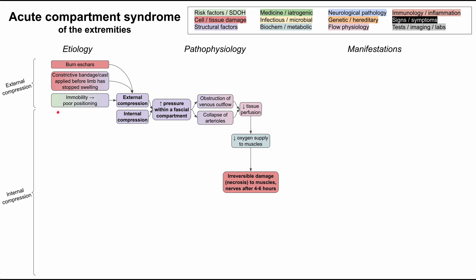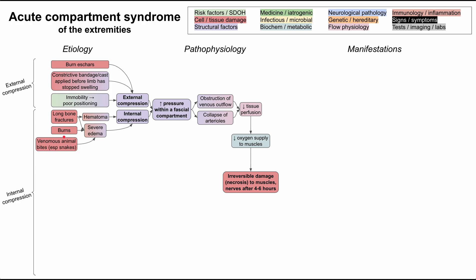Internal compression has a longer list of etiologies. Hematomas — bleeds under the skin — can occur from long bone fractures. Notably, many of these causes are trauma-related. Severe edema can also cause internal compression; long bone fractures can produce edema, and burns can cause significant swelling. Animal bites, especially venomous ones like snake bites, can cause severe edema as the body reacts to the venom. Reperfusion syndrome, when a previously ischemic limb is finally reperfused, also causes severe swelling and edema that can lead to compartment syndrome.